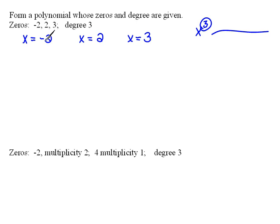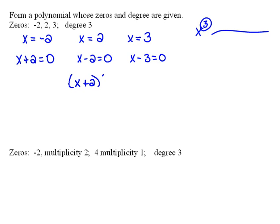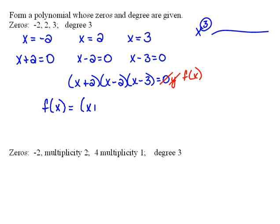Let's see how we form the polynomial. We move each zero over to the same side as x. So we'll have x plus 2 equals 0, x minus 2 equals 0, and x minus 3 equals 0. If each one of these equals 0, then when we multiply them together they must also equal 0 — since 0 times anything is still 0. Because these are x-intercepts, or zeros, that's why it equals 0, but technically that's a y-value, so we write it as f of x. So f of x equals x plus 2 times x minus 2 times x minus 3.